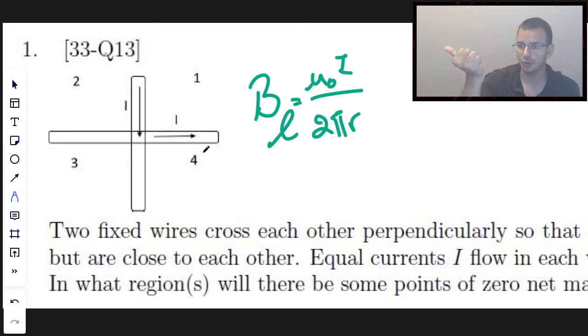So, specifically, you're going to use the right-hand rule. You place your thumb in the direction of the wire and you curl your fingers. So for the vertical wire, thumb points down, wrap your fingers, and it's going to go this direction.